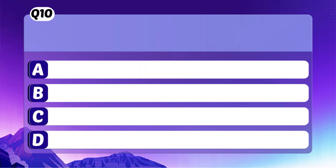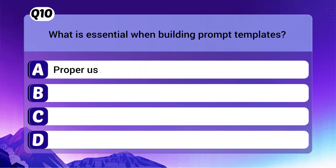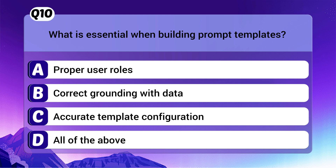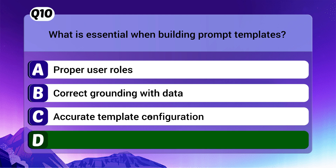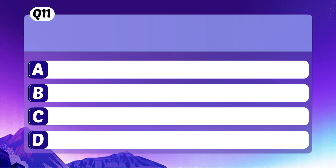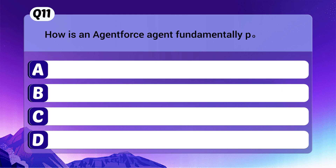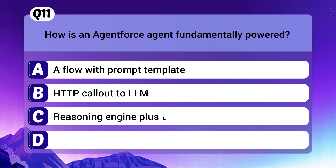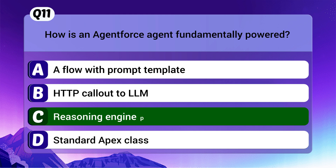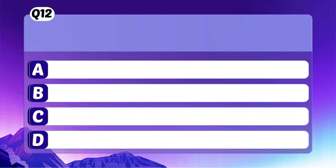Question 10: What is essential when building prompt templates? The correct answer is D: All of the above. Question 11: How is an Agent Force agent fundamentally powered? The correct answer is C: Reasoning engine plus LLM.